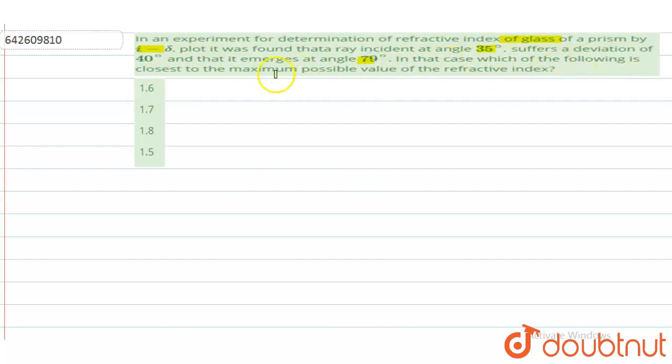In this case, which of the following is closest to the maximum possible value of refractive index? So we have to find the value of refractive index of the prism.